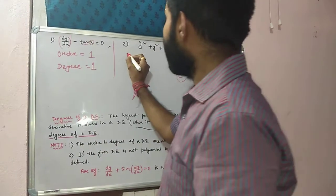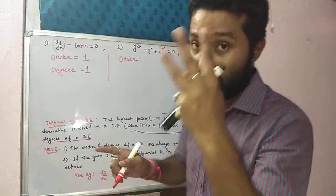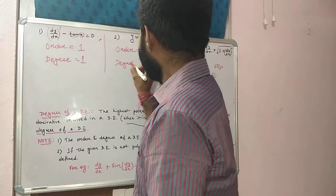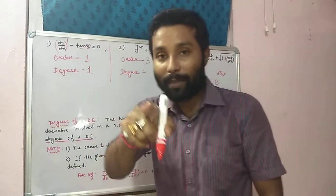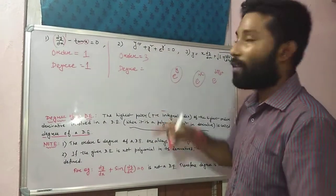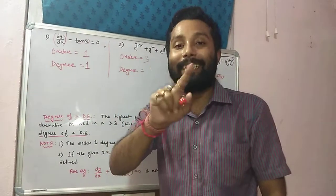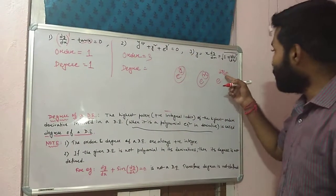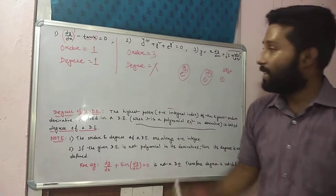We can find order from all differential equations. What should be the order of this differential equation? y triple dash means three times differentiation — so order is three. What about degree? Degree ka matlab hai: jisko maximum time differentiate kiya gaya hai, uska power. Lekin degree find out karne ke liye, it should be polynomial in its derivative. But this equation is not a polynomial in its derivative because e ka power differentiation form mein hai — e to the power dy/dx. Agar exponential ka power standard form mein nahi hoga — like e^y or e^x — aur dy/dx form mein hoga, then this is not a polynomial in its derivative. So degree is undefined.